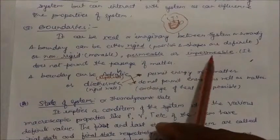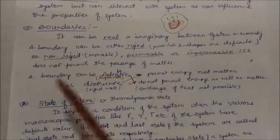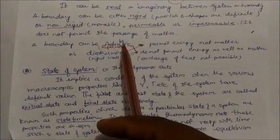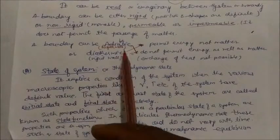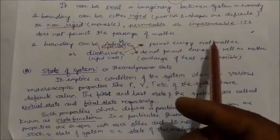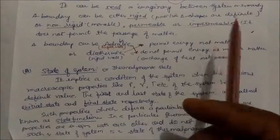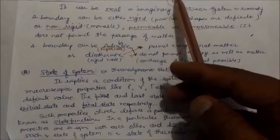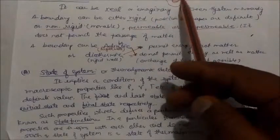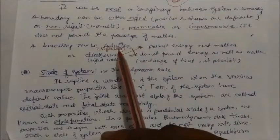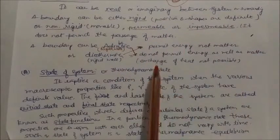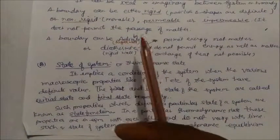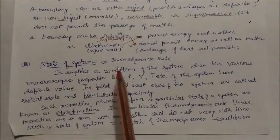A wall can be permeable or impermeable — a permeable wall like a cell membrane allows passage of matter. A boundary can be adiabatic or diathermic. An adiabatic wall is rigid and does not permit exchange of heat or matter. A diathermic wall is also rigid, but it permits energy transfer while not allowing matter to pass. For example, if you touch a cup of hot tea and feel the heat, the wall is diathermic — heat is conducting through the clay wall. A thermos flask, by contrast, has an adiabatic wall where no heat exchange is possible.